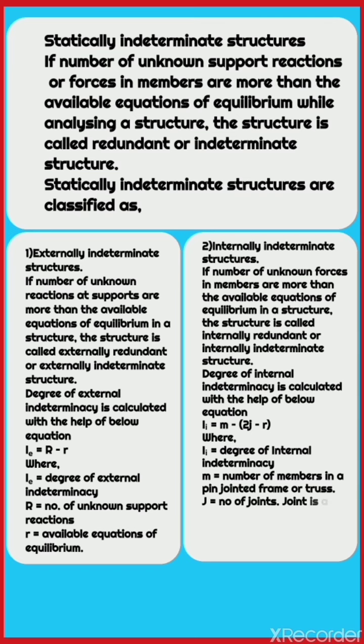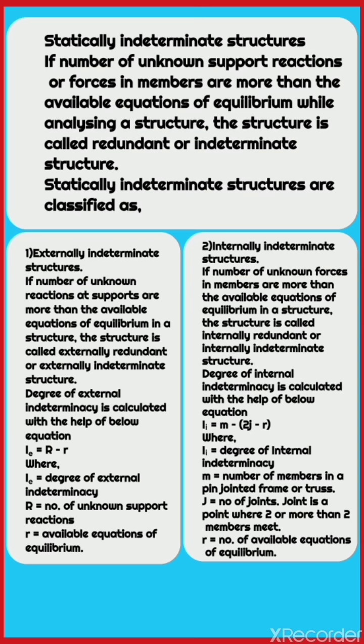The degree of internal indeterminacy: ii = m − 2j − r, where ii is the degree of internal indeterminacy, m is the number of members in a pin-jointed frame or truss, j is the number of joints (a point where two or more members meet), and r is the number of available equations of equilibrium.